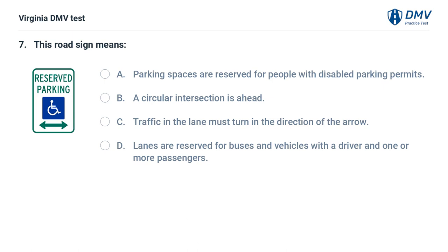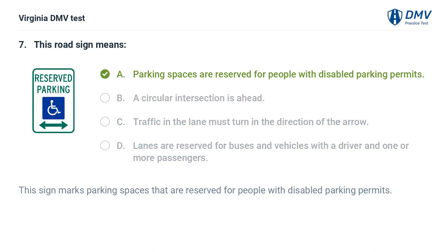This road sign means: A. Parking spaces are reserved for people with disabled parking permits, B. A circular intersection is ahead, C. Traffic in the lane must turn in the direction of the arrow, D. Lanes are reserved for buses and vehicles with a driver and one or more passengers. The correct answer is A. This sign marks parking spaces that are reserved for people with disabled parking permits.